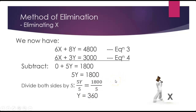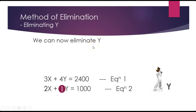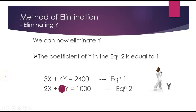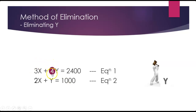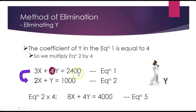Now we need to find x. The first method is to complete it using just elimination — eliminate y and solve for x. Looking at the second equation, the coefficient of y is 1, since 2x plus y means 2x plus 1y. So we take that 1 and use it to multiply equation 1, which leaves equation 1 untouched: 3x plus 4y equals 2400. Then the coefficient of y in equation 1 is 4, so we multiply everything in equation 2 by 4: 4 times 2 is 8x, plus 4 times 1y is 4y, equals 4 times 1000 is 4000. We label this equation 5.